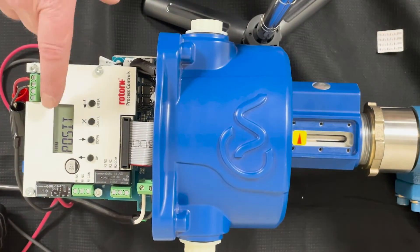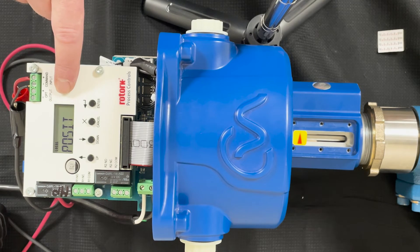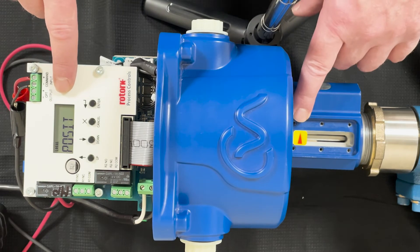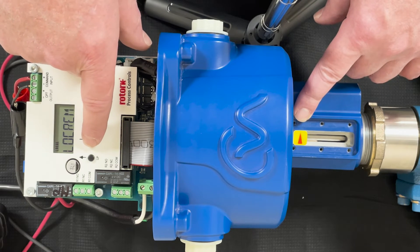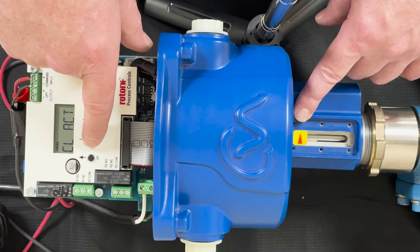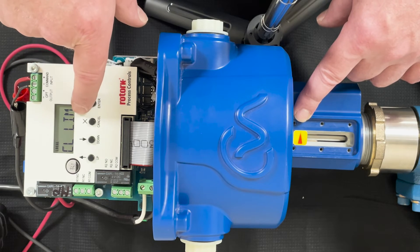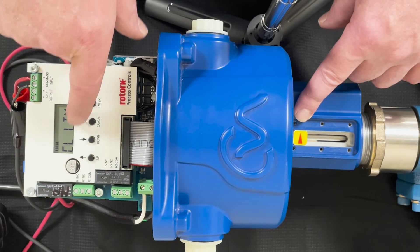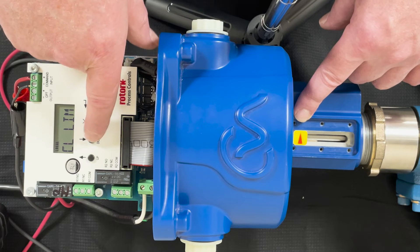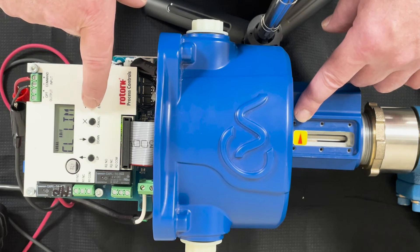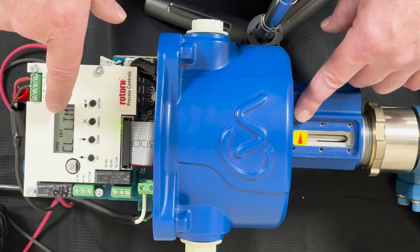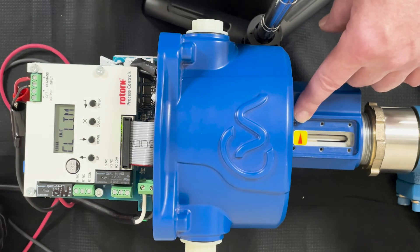Now we have to set the positioner to the zero limit. In order to do that, we want to go to the CL limit. Hit enter and enter again and it says edit. Now we can set our 4 milliamps on the analog, and then we hit enter again and now it's saved.